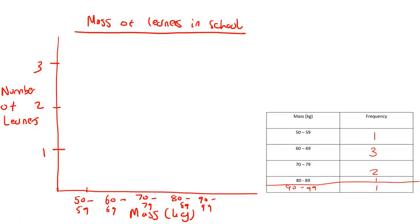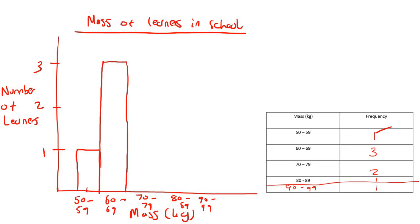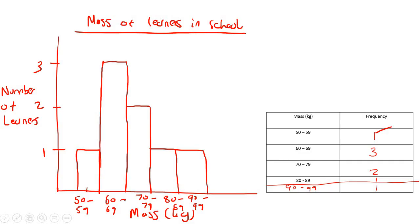For 50 to 59, there is only one person — draw that bar. Remember, it's not a line graph now; it's a histogram. For 60 to 69, there are three — and remember, there's no gap in between, because this is not a bar graph. For 70 to 79, two people. For 80 to 89, one. And for 90 to 99, also one. So that is how we do a histogram. Some teachers leave a gap at the start, some don't — both are correct. But there must be no gaps between the bars, unlike a bar graph where you do leave gaps.